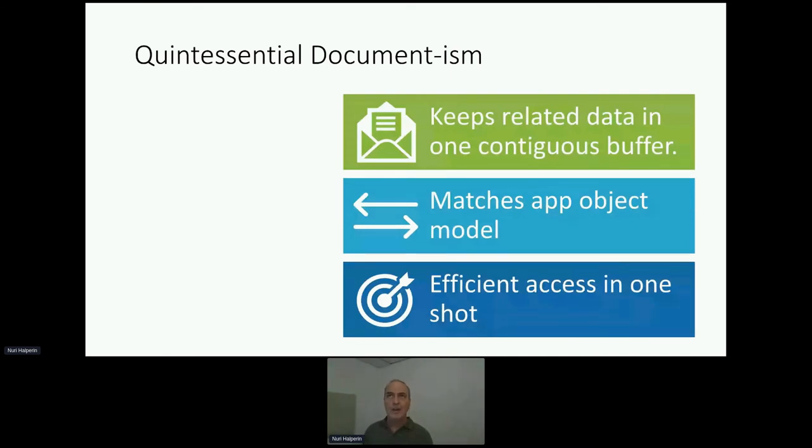So what is it about document-orientism that we want to be aware of? In document-oriented databases, Mongo being a prime example, documents are stored as a bunch of fields with values in one contiguous buffer. So a single document encapsulates all the fields, all of the values in one document.